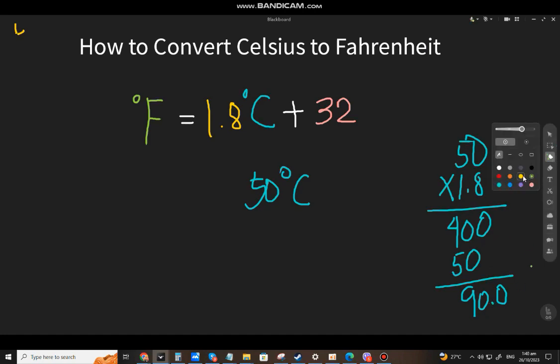So for the 90 there you have to add 32 and that will be around 122 degrees Fahrenheit. So 50 degrees Celsius is equal to 122 degrees Fahrenheit.